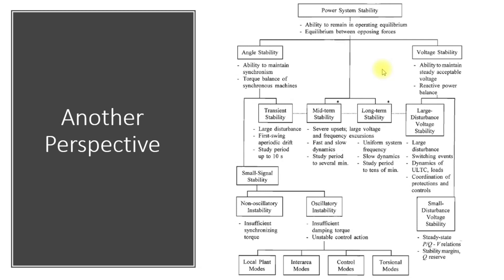Another reason for oscillatory instability is unstable control operation. When exciter models, generator models, and governor models are not tuned properly, instead of damping oscillations, they provide positive feedback that increases oscillations. The three main types of oscillatory instability are inter-area oscillations, intra-plant (within-plant) oscillations, and torsional oscillations. Torsional oscillations refer to stresses on the shaft of the system.